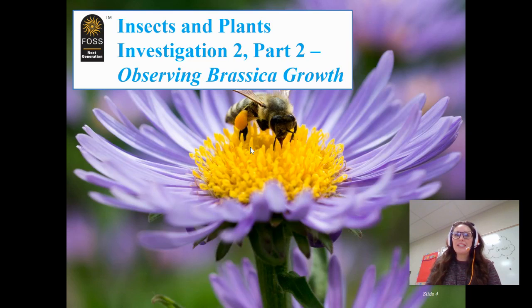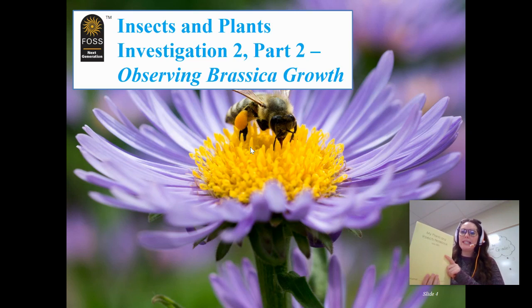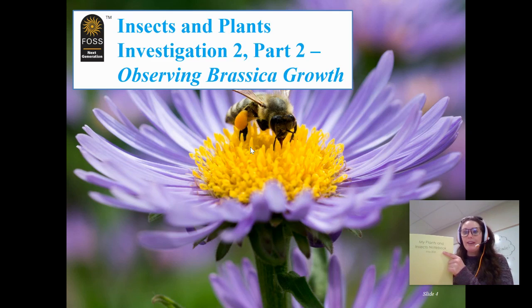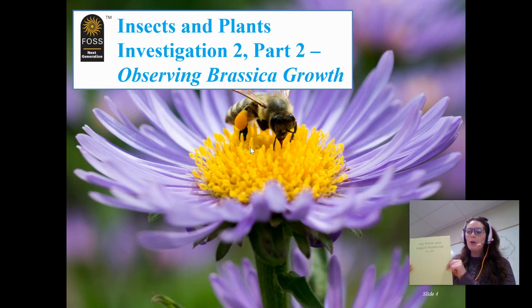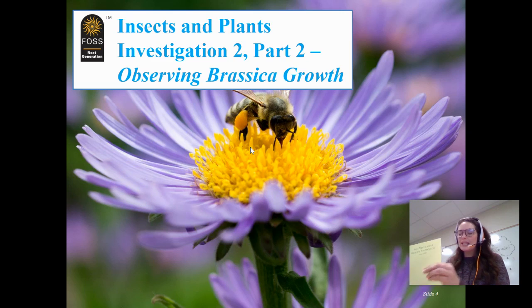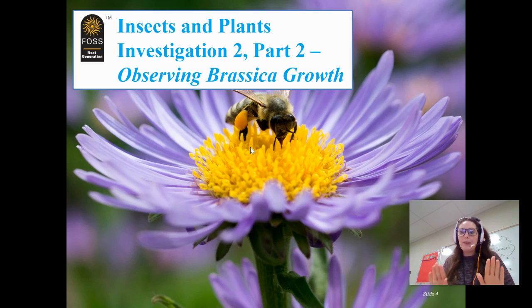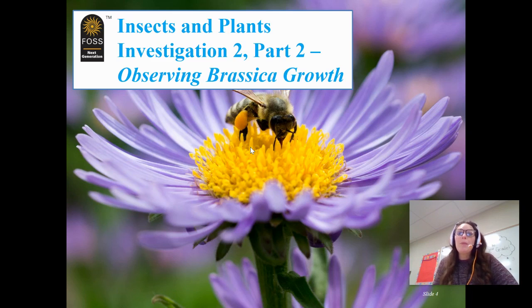Hey second grade, Miss Shannon here with our science lesson for today. We will be observing our brassica growth. For this assignment you will need your plant and insect notebook — the one labeled May, which we used on Friday. The May science notebook we will use for our brassica plant, and the one labeled April we will continue to use for our mealworms. That's how you can keep both of them straight, so make sure you have that notebook with you before we begin.